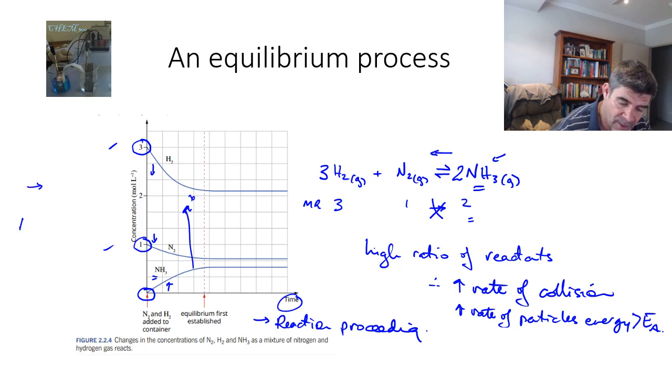We will start with only the forward reaction occurring. But as the concentration of NH₃ starts to increase, then we will start to have the reverse reaction starting to occur as well, until it reaches a point where these lines are horizontal.